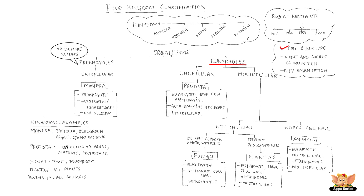Organisms having a well-defined nucleus are called eukaryotes. Kingdom Protista has eukaryotic unicellular organisms. Their mode and source of nutrition can be autotrophic or heterotrophic. Some of these have appendages such as hair-like cilia or whip-like flagella.